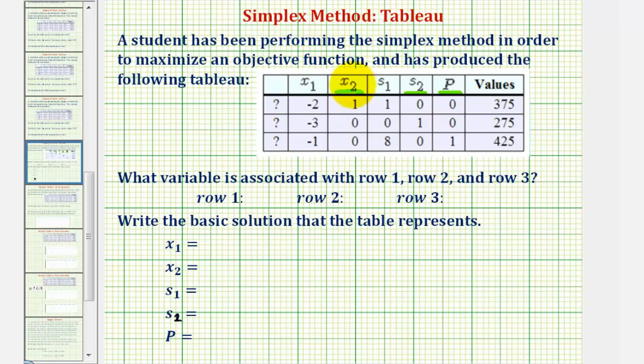So looking at the column labeled x sub two, because the one occurs in the first row, the first row is associated with x sub two.